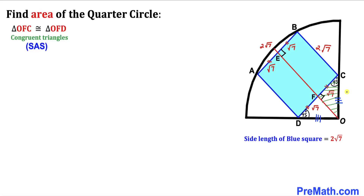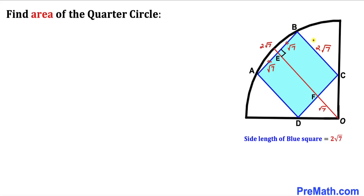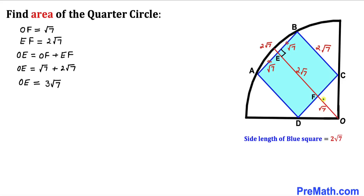Focusing on right triangle OFC, we know the angle at F is 90°. Since angle OCD = 45°, angle COF must also be 45°. Therefore triangle OFC is isosceles with the two equal angles, meaning OF = FC. Since FC = √7, then OF = √7 as well. Moreover, BC = EF = 2√7.